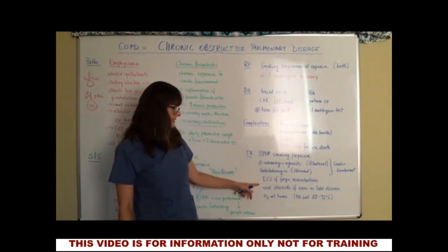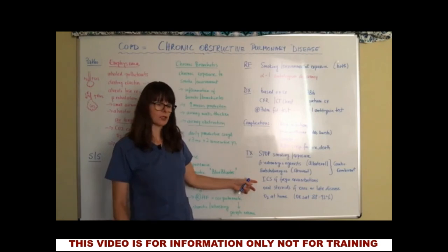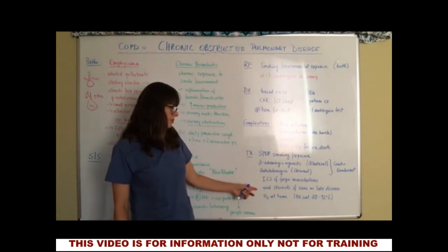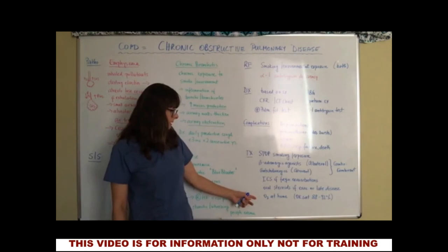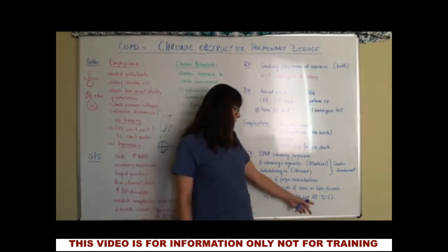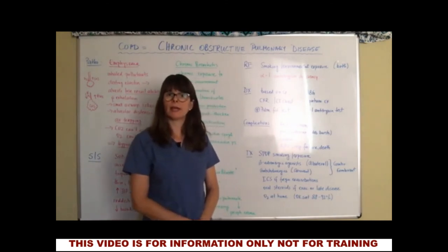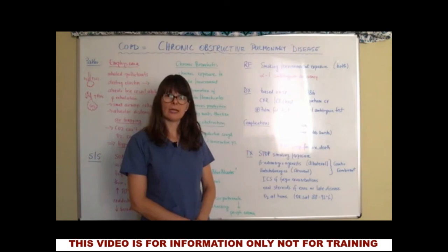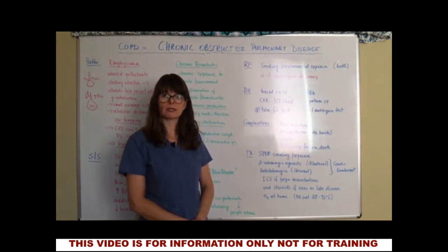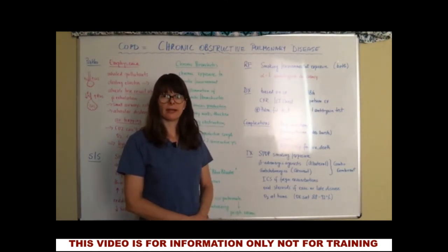Patients may also need an ICS — inhaled corticosteroid — for frequent exacerbations requiring hospitalization. Oral steroids may be required if exacerbations happen very frequently or late in the disease. They might also need supplemental O2 at home. It's acceptable for COPD patients to have an O2 sat between 88 and 92%. Don't panic at 90% if the patient looks comfortable — always ask about their lung history, and ask what their normal O2 sat is.